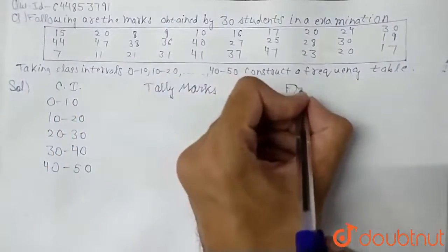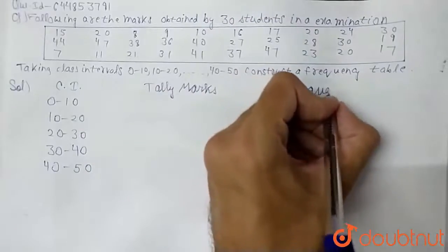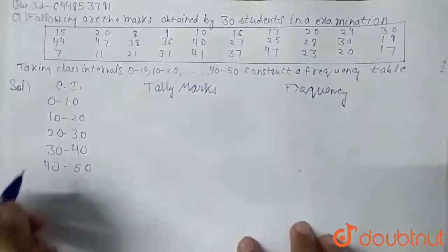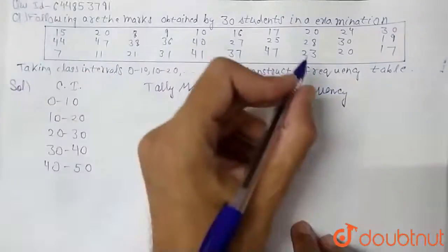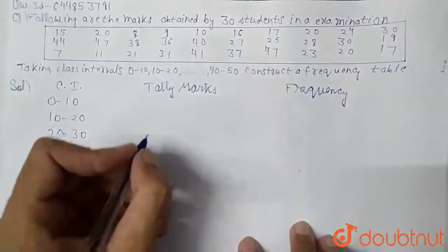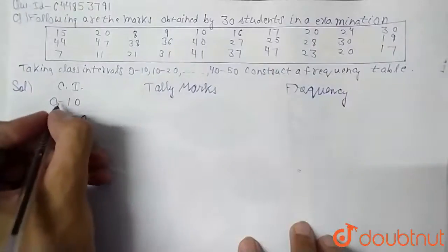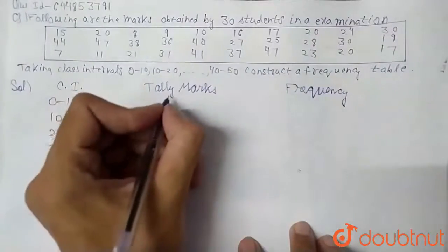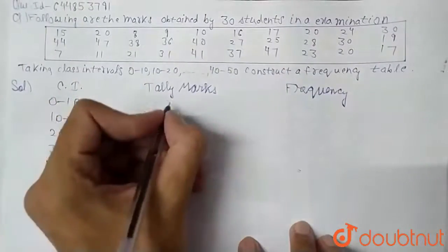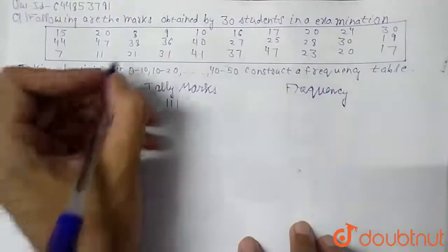Now, we have tally marks here, and here is frequency. So now for 0 to 10, if we check here, we have three values in between 0 to 10, so this is 3.